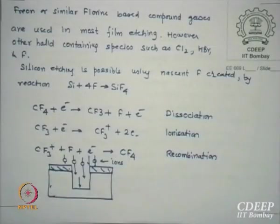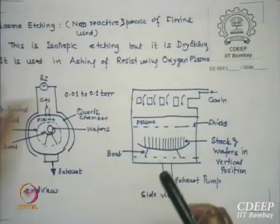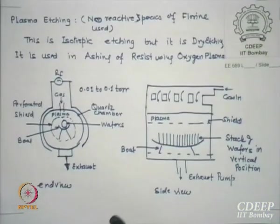No one is using Freon now but I think many VLSI companies may still be using it. These equations are clear. Are the two mechanisms in RIE clear? One is bombardment, the other is chemical reaction.